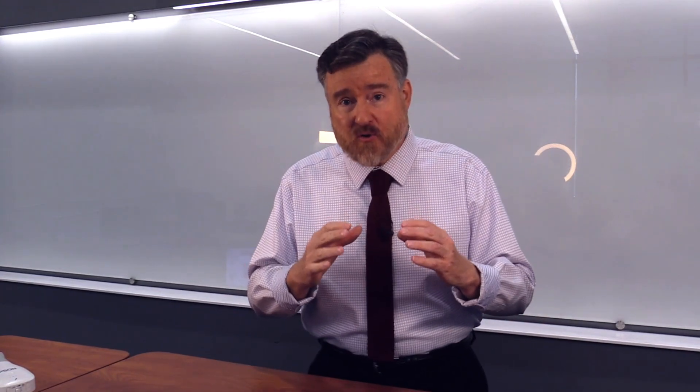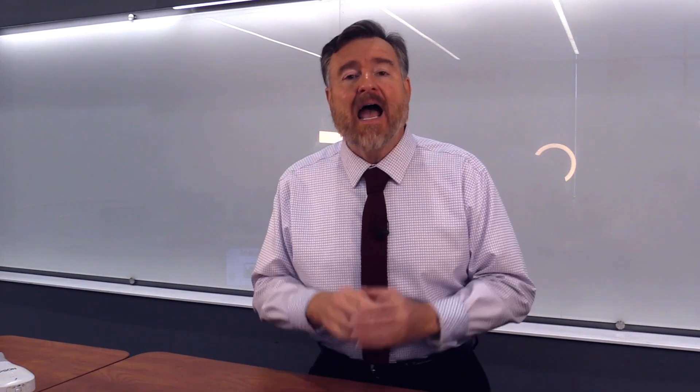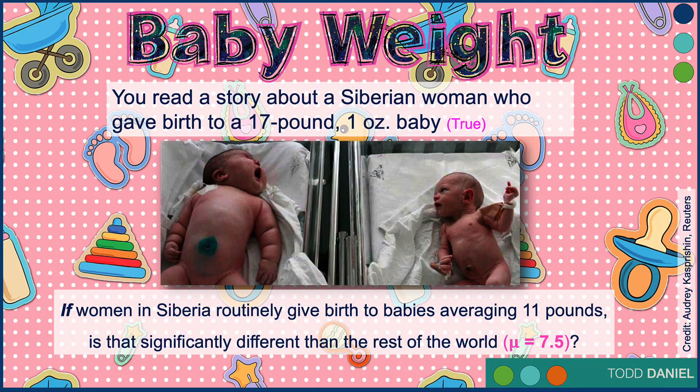Now that we know what the numbers truly are, let's apply what we're learning. You continue to search around on the internet and you come across an amazing story. You read about a woman in Siberia who gave birth to a 17-pound, one-ounce baby. This is a true story — I know, I read it on the internet. And it also came from Reuters, so I'm going to trust this one. And it has a picture, so it can't obviously be false.